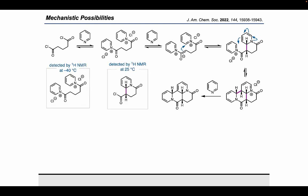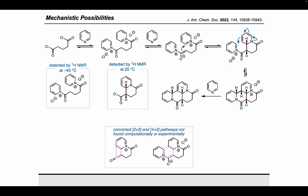By NMR, the major species at 25 degrees Celsius was this monocyclized compound, and the major species at negative 40 degrees Celsius was this bispyridinium, which proved that our mechanistic hypothesis was probably on the right track. We computationally also looked at this mechanism, and we couldn't find any evidence for a concerted 2-plus-2 or concerted 4-plus-2 pathway to form the tetracyclic scaffold of these natural products.